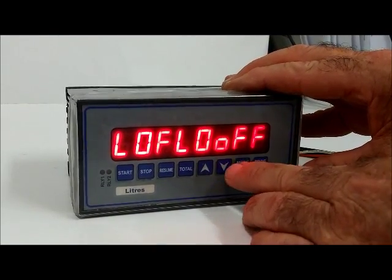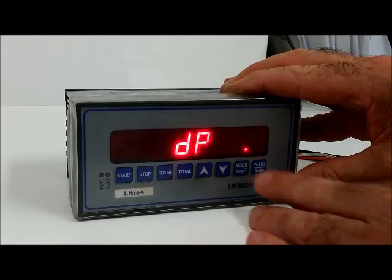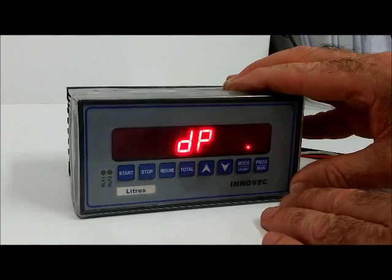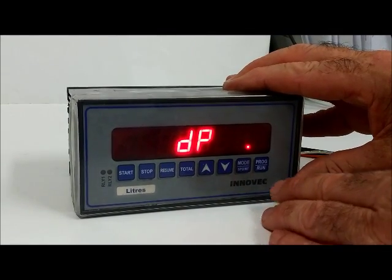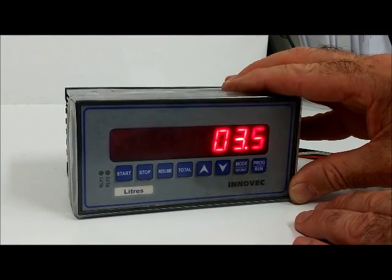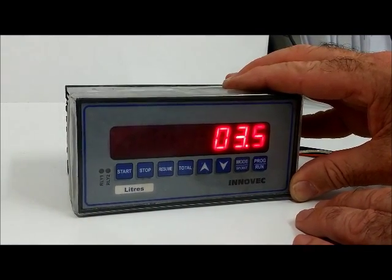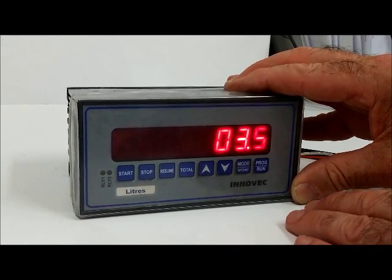Low flow alarm can be turned on or off. Back to the decimal point position. If you're satisfied with the programming, pressing the program button will return you to run and save the values to E-squared memory.